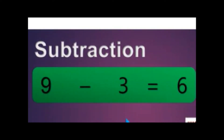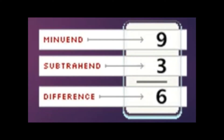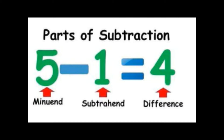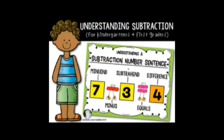The second operation is subtraction. The parts are: minuend, subtrahend, and difference. We have number nine as the minuend, three as the subtrahend, and the answer six we call difference. Another example: five is the minuend, one is the subtrahend, and the answer four is the difference. One more example: seven is the minuend, three is the subtrahend, and four is the difference.